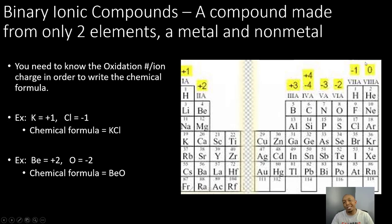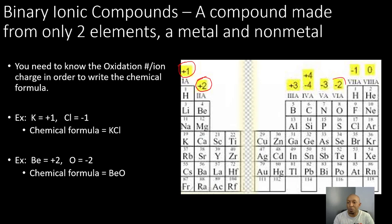Binary ionic compounds are compounds made from two elements: a metal and a non-metal. You need to know the oxidation number and the ionic charge to write the chemical formula. Elements in the first group have a positive 1 charge — like hydrogen, lithium, and sodium. Elements in the next group have a positive 2 charge — like beryllium, magnesium, and calcium. Elements in another group have a negative 2 charge, while noble gases have a zero charge because they already have a stable outer electron ring.